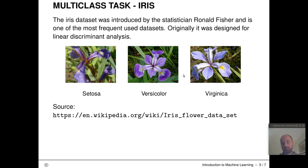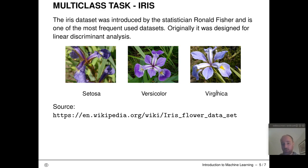Finally, here is probably the most well-known multi-class classification task in machine learning: the iris dataset. Introduced by the famous statistician Ronald Fisher, it was originally designed as an example dataset for linear discriminant analysis. The dataset contains measurements on the iris flower and its three subspecies: Setosa, Versicolor, and Virginica. It's so famous it has its own Wikipedia page with extra background details.